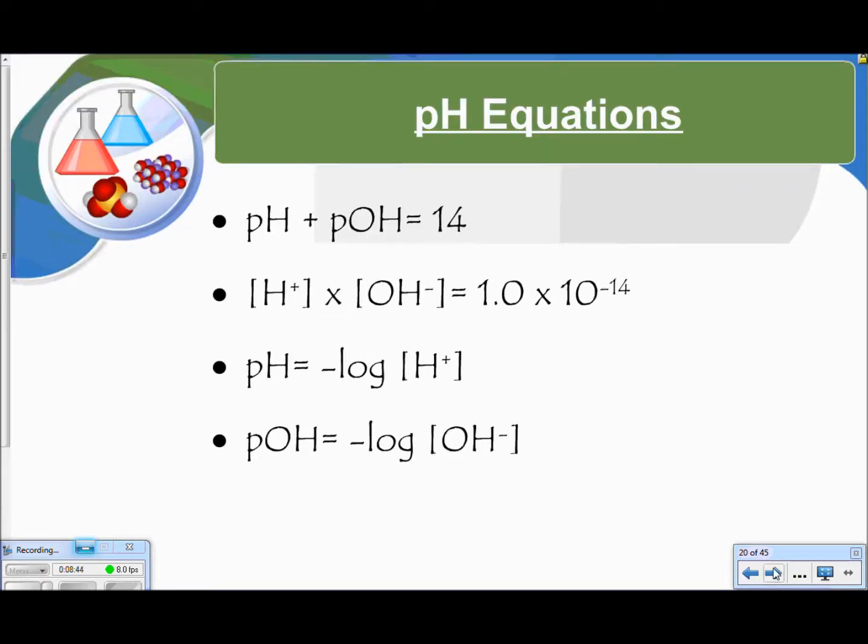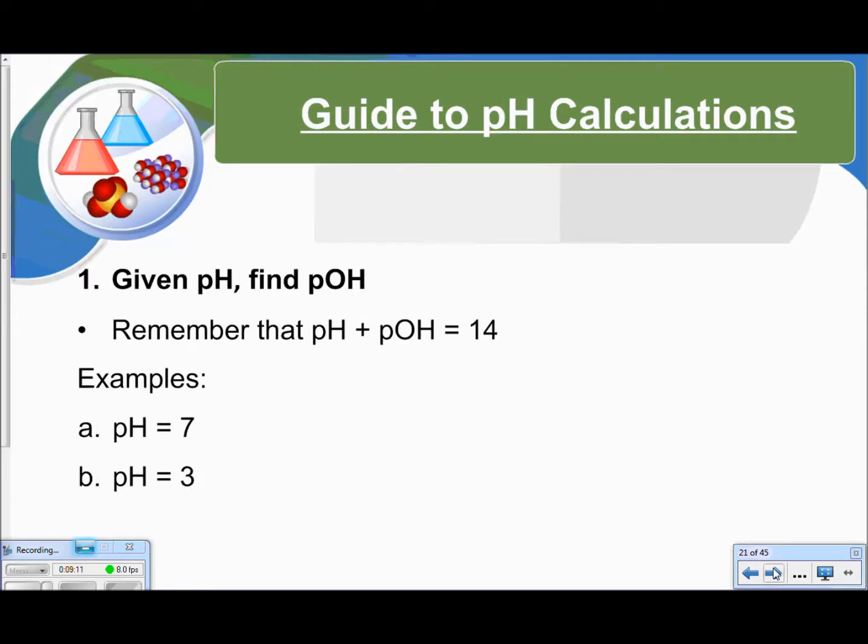So here are the equations we're going to give you for any tests or quizzes over this unit. It contains four equations. pH plus pOH equals 14. If you multiply your concentrations together, you're going to get 1.0 times 10 to the negative 14. pH is the negative log of the hydrogen ion concentration, and your pOH is the negative log of your hydroxide ion concentration. Let's do some examples.